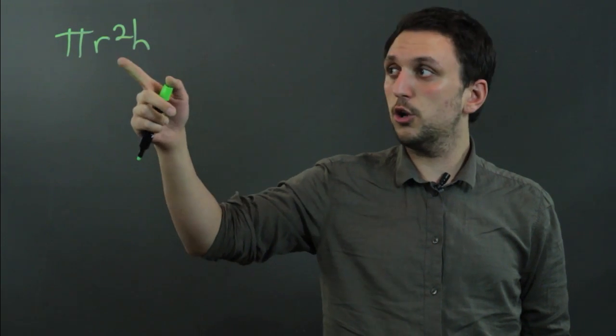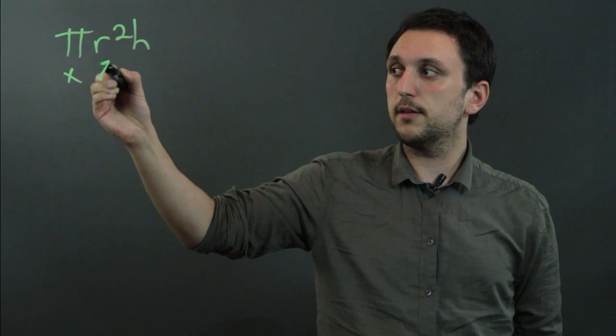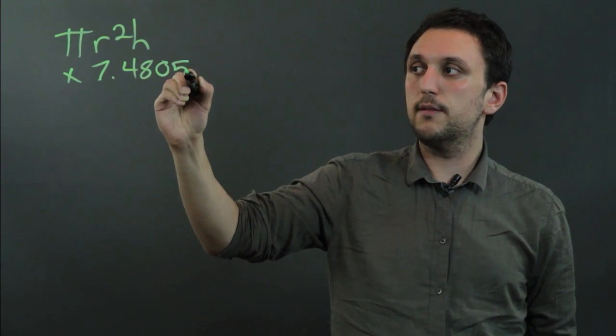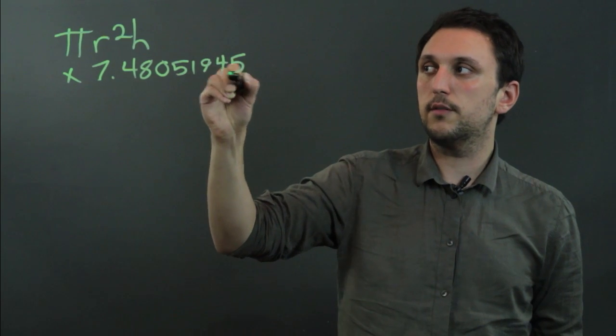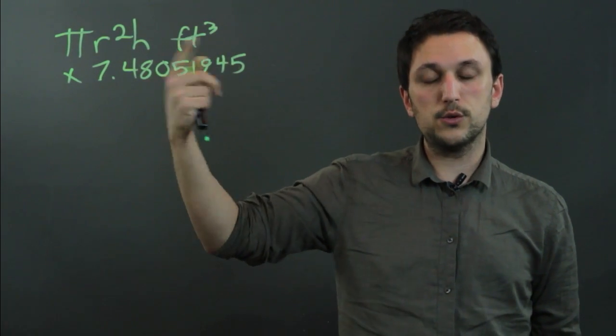Now, if you've measured these in cubic feet, then if you want to find it in gallons, you just multiply by 7.48051945. So, if this is in feet cubed, you can multiply by this and you get the number of gallons.